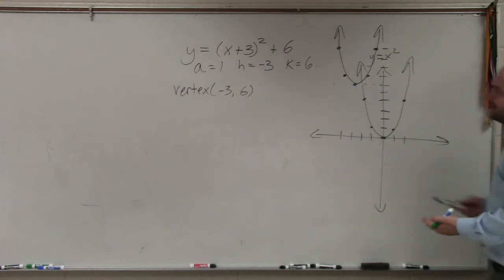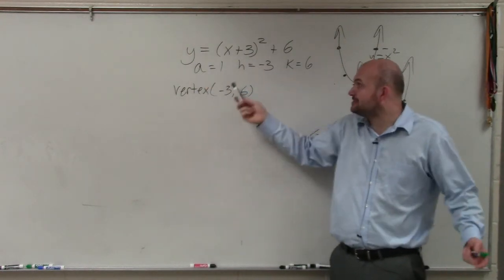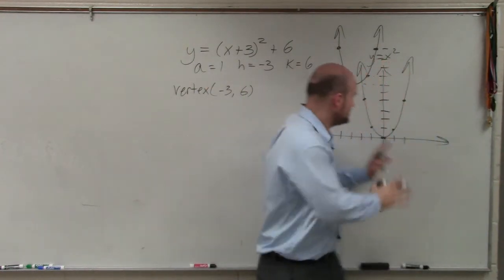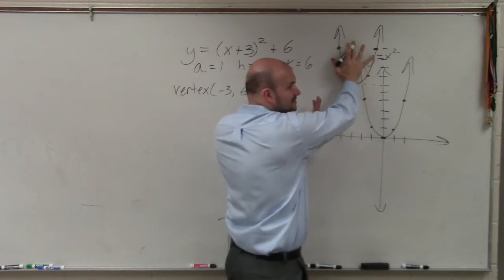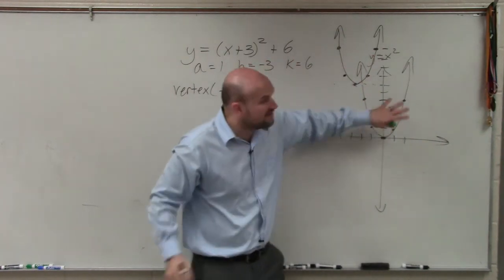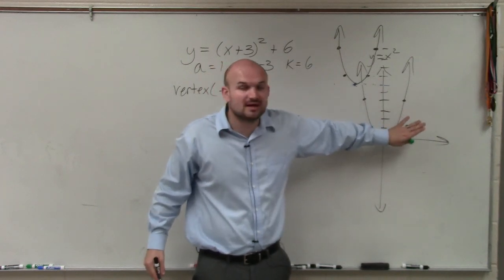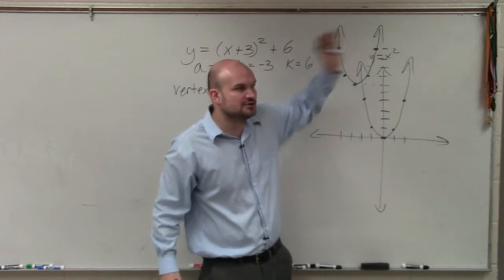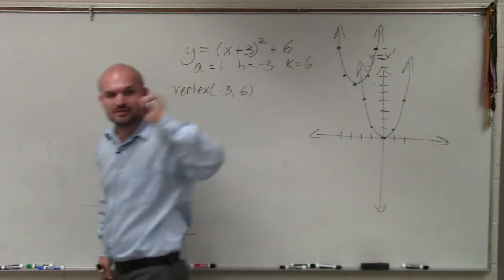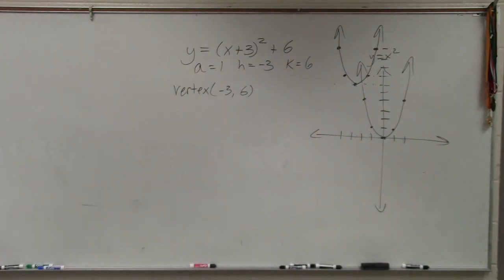If a is equal to 1, all we got to do is find the new vertex and then just slide the new graph over there. So it's very important to know what the parent graph is, because once you know the parent graph, as long as a is equal to 1, it's the same graph. You just move it to its new position due to its transformation. Do you draw both? You do not have to draw both. I'm just doing it as an instructional tool.